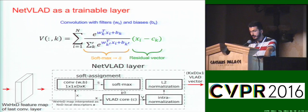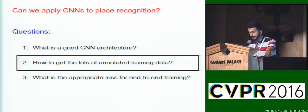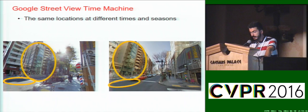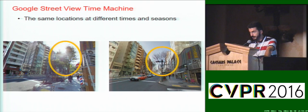The next important question is how to get lots of annotated data needed to train the network. We use a new source of information, the Google Street View Time Machine, which provides multiple street view images for the same locations, taken at different times and seasons. It is a very useful data source as it contains exactly the information needed to train a network for place recognition: viewpoint changes, large changes in lighting conditions, occluders and confusers such as people and cars, as well as vegetation. And there is lots of this data available.